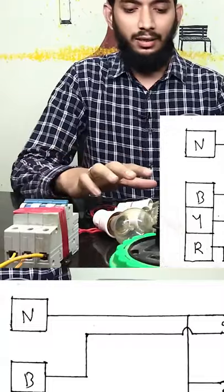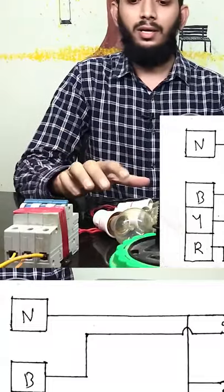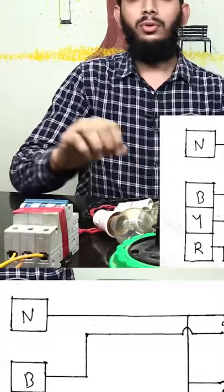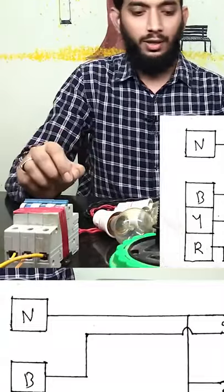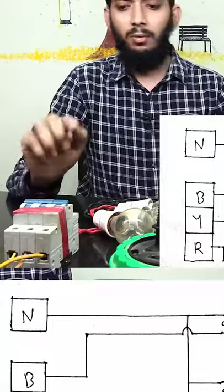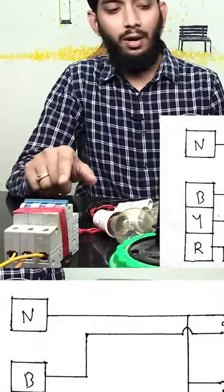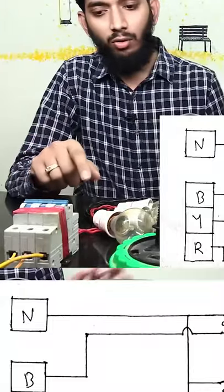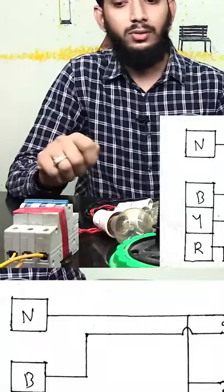There is a direct bulb in 3-phase supply. One bulb is connected to one phase, and one bulb is connected to neutral current.